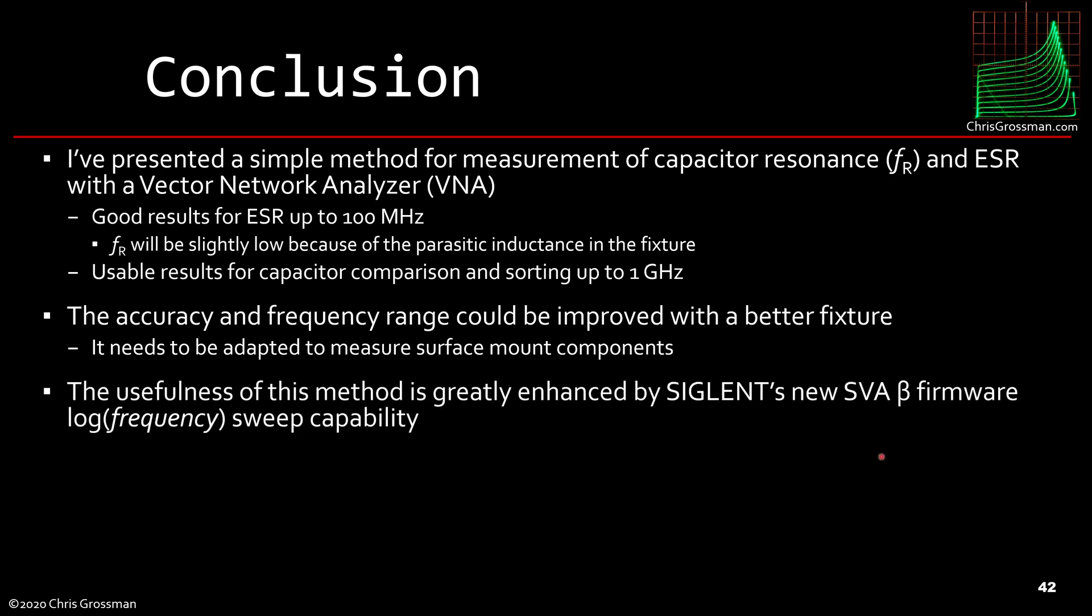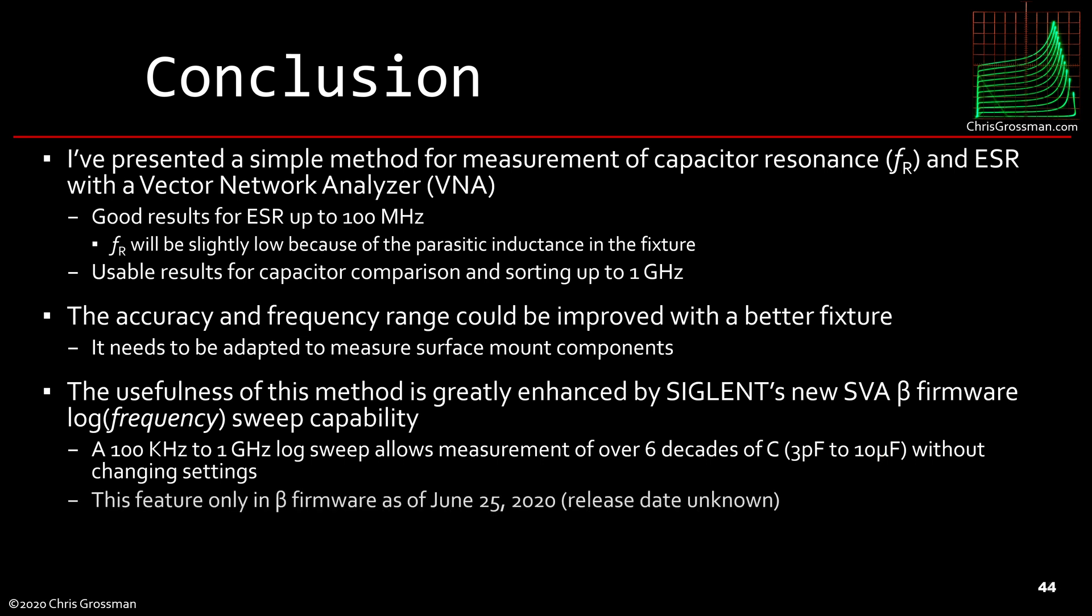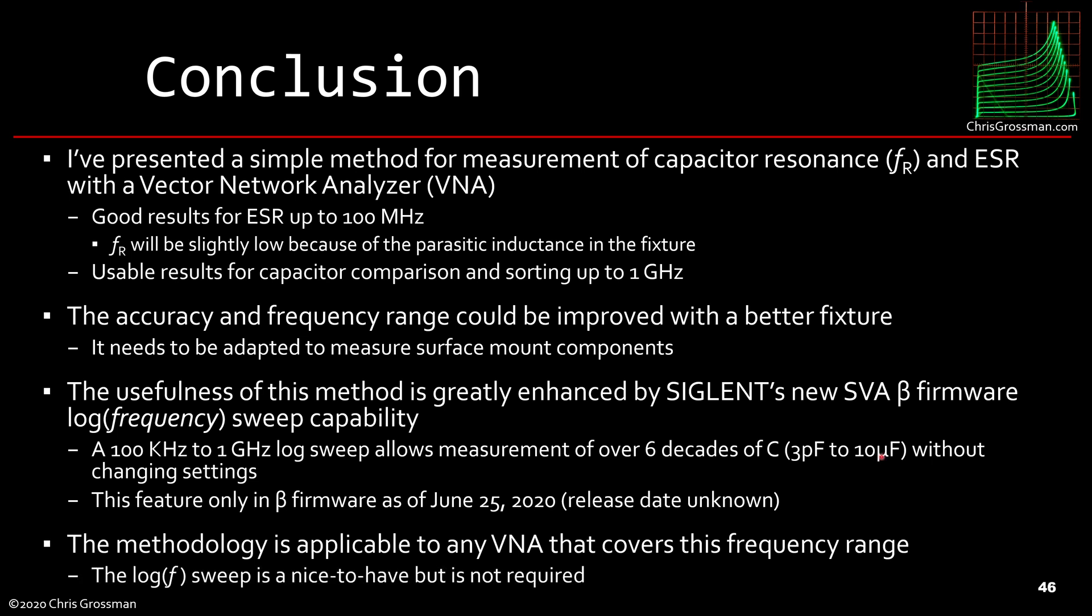The usefulness of the method is greatly enhanced by Siglent's new beta firmware with the log frequency sweep. Because a 100 kilohertz to 1 gigahertz sweep allows me to measure capacitances from 3 picofarads up to 10 microfarads without changing settings. This is currently only a beta firmware feature and I don't know when the release date will be. This methodology works for any VNA that covers this frequency range. Even a nano VNA will work. And the log frequency sweep is nice to have but is not required to make these measurements work.